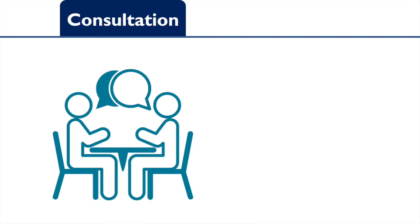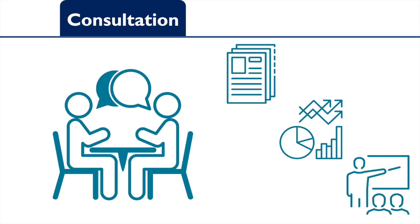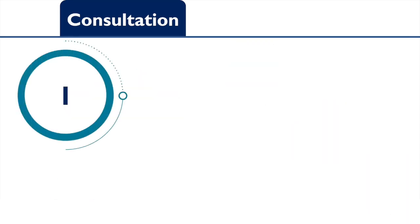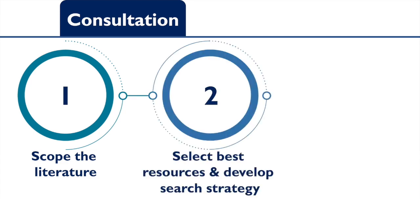If you're working on a research paper, poster, or presentation, an informationist can help you through the various phases of your project. First, they can show you how to scope the literature to get a sense of what's already been published on a topic. Next, they can work with you to select the best resources for your project and develop a search strategy to find high-quality literature.